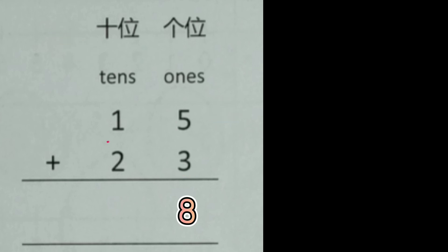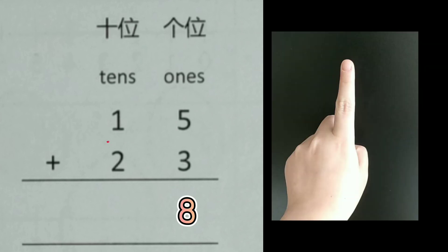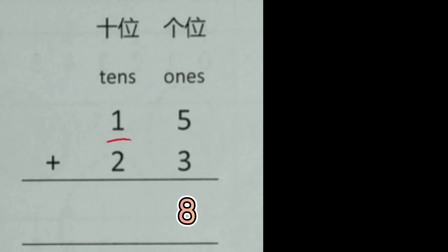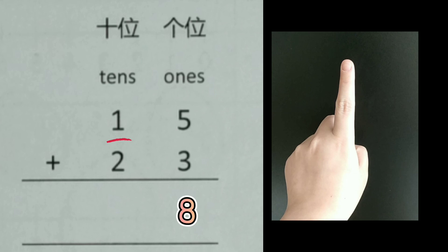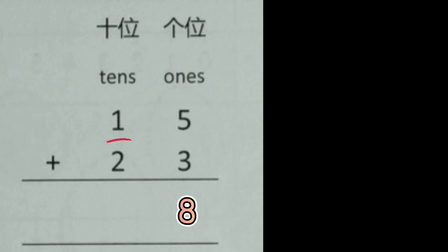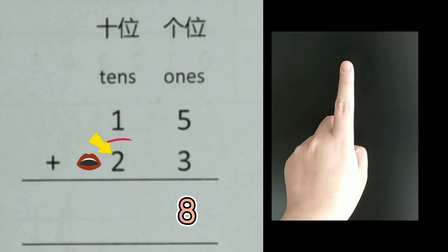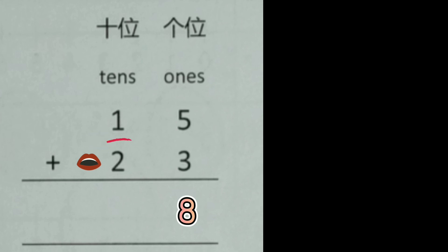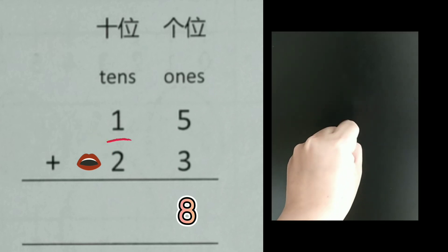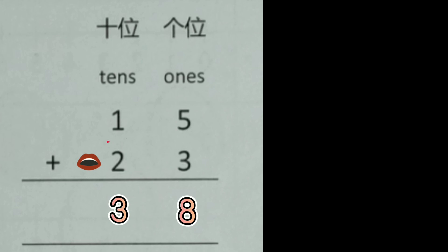Now let's go to the tenth column. Underline the smaller number, 1, and show one finger. Say the bigger number in the mouth. Let's count: 2, 3. The answer is 3.